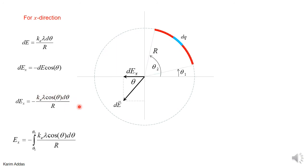We can write down the integration very easily by identifying the angle of the first part of the arc and the last part of the arc. And that gives us this integration, which will give us then the electric field in the X direction due to this whole arc of charge.